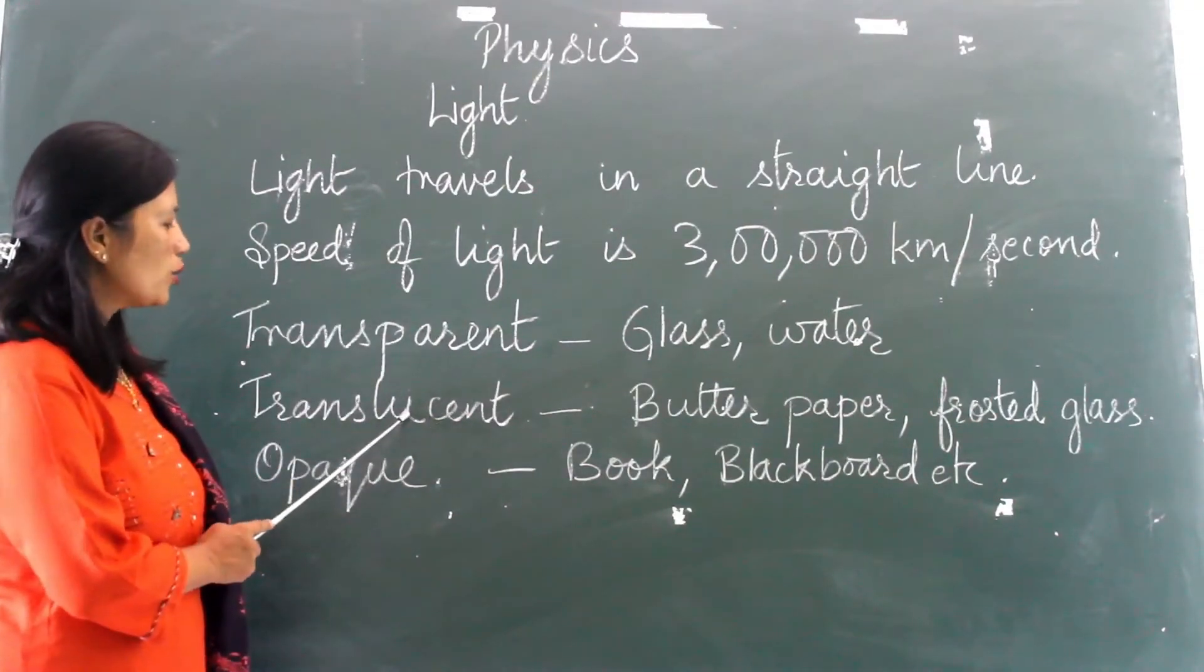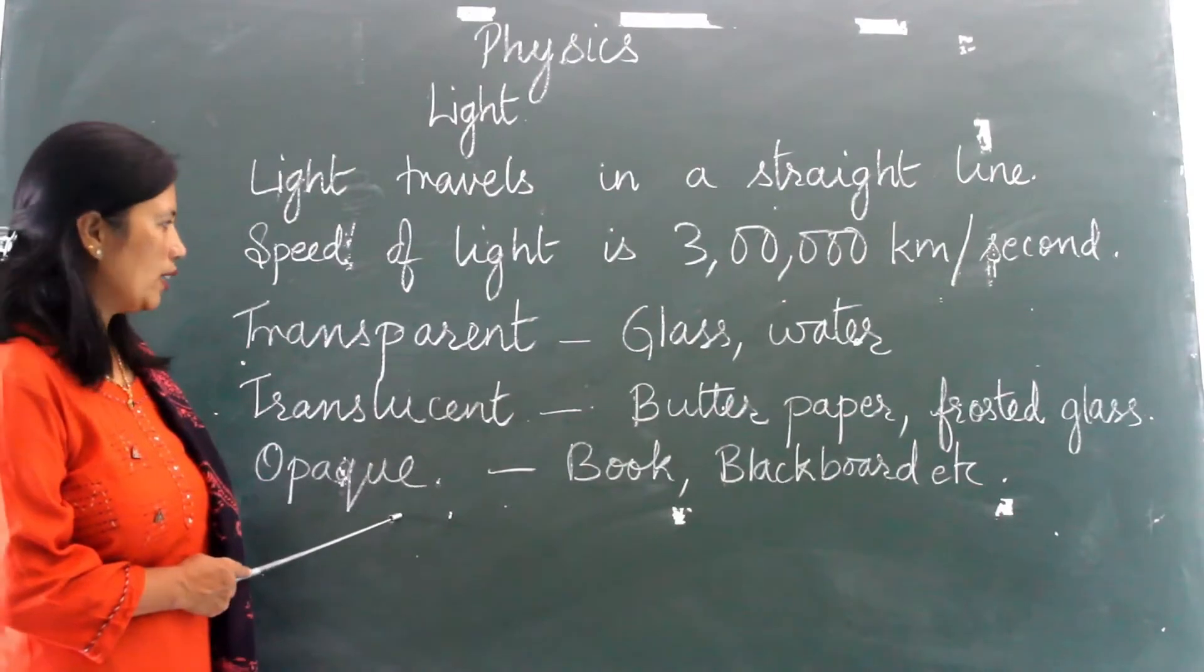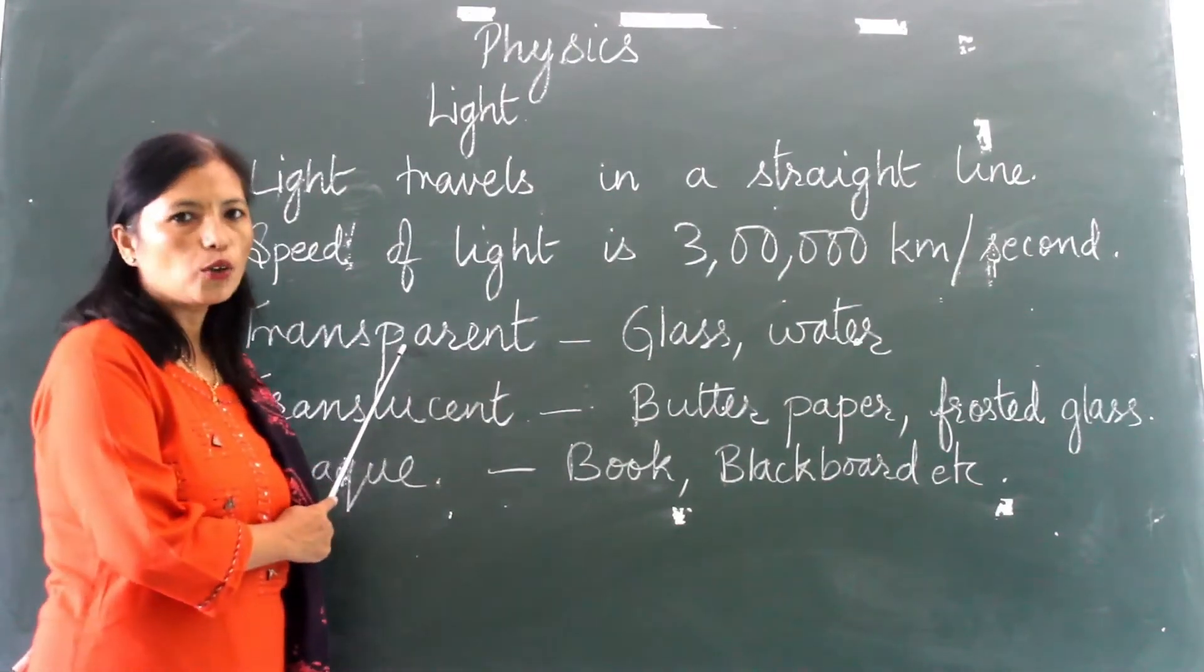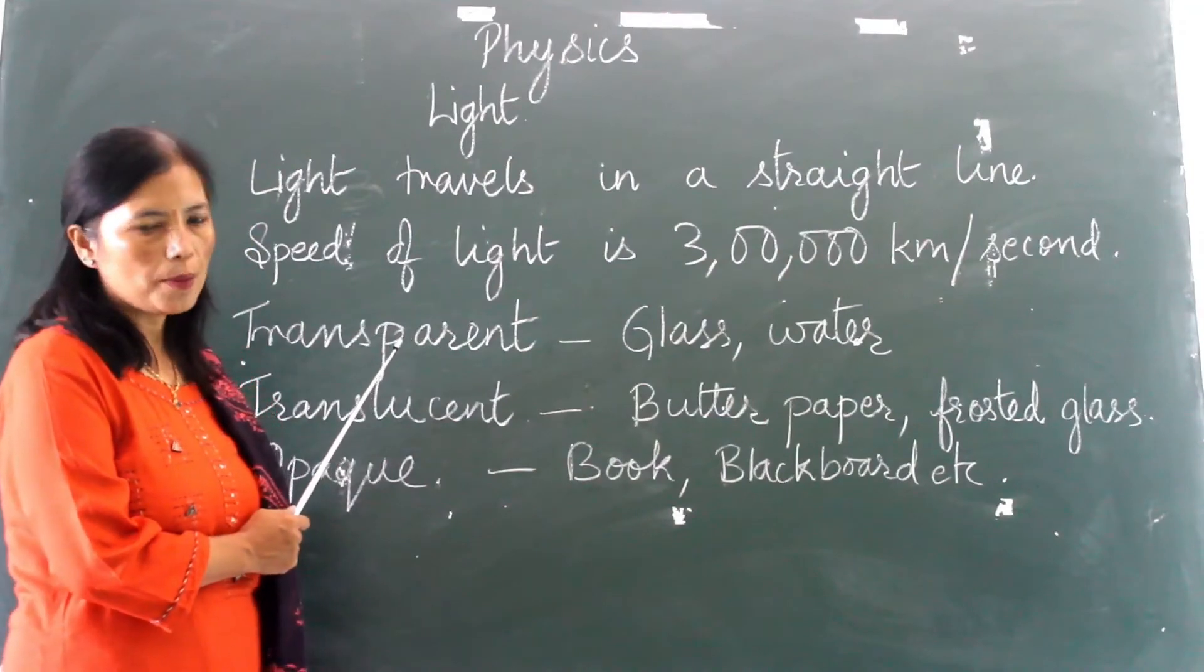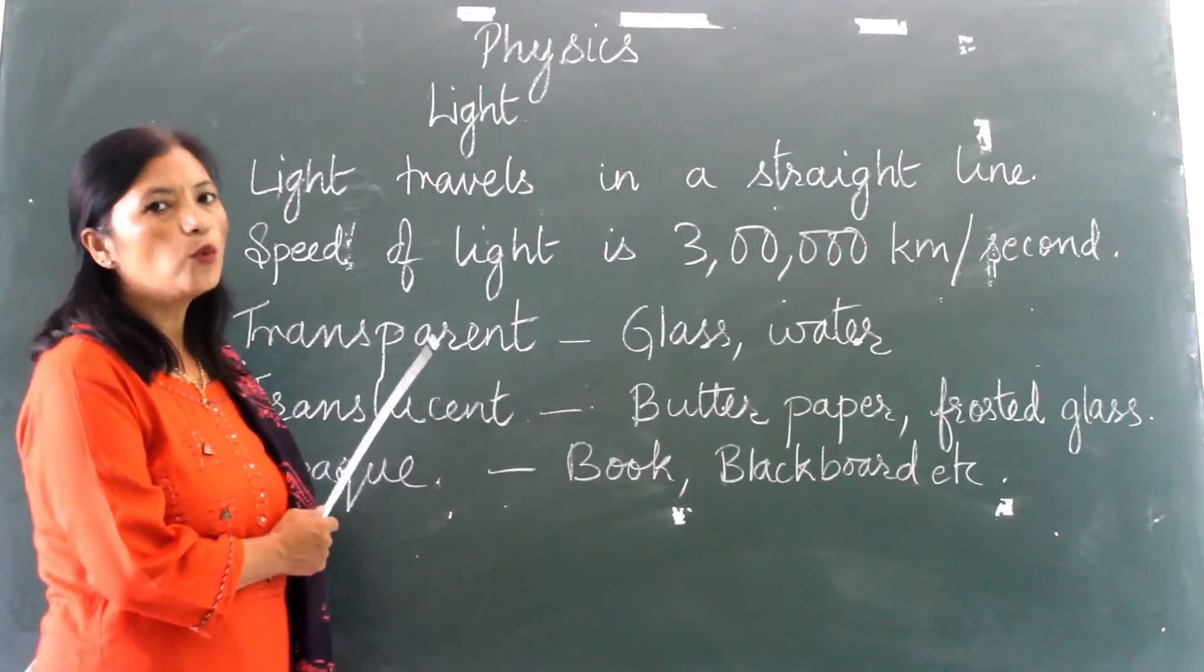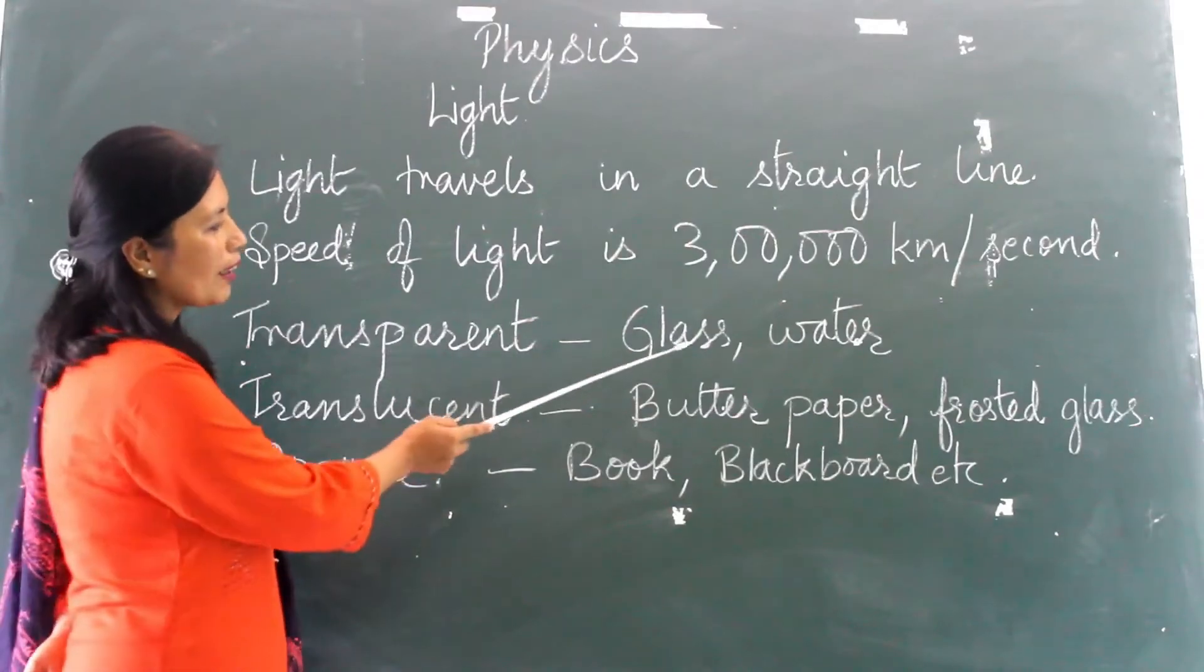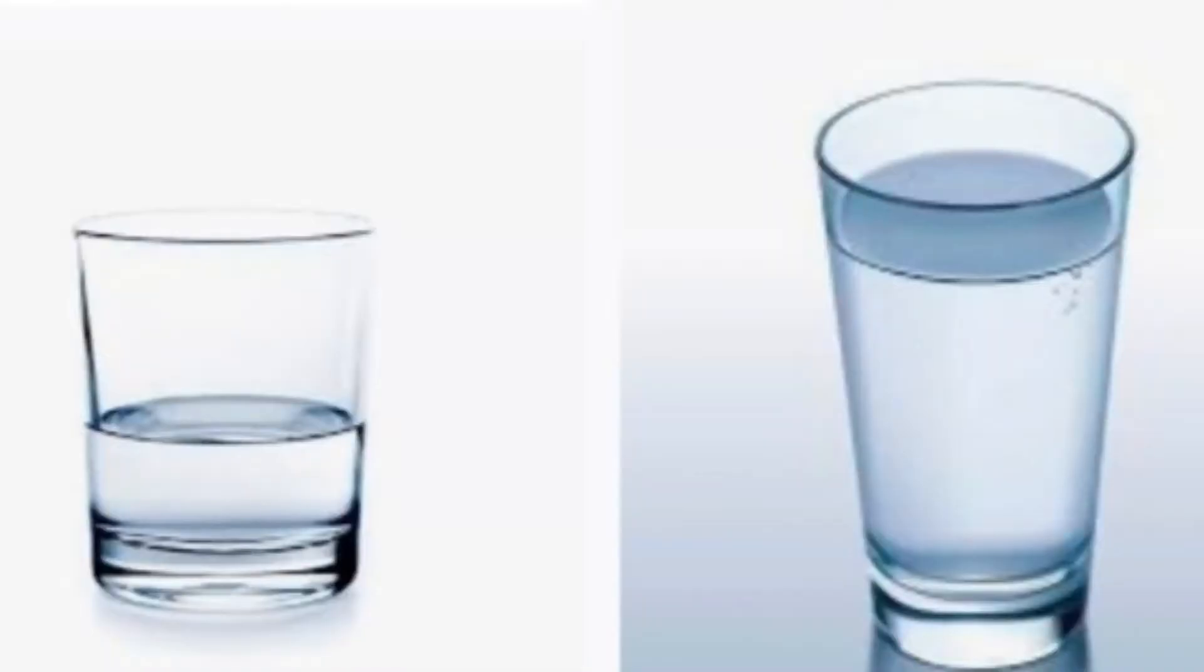Transparent, translucent, and opaque. Transparent objects are those which allow light to pass through them easily and we can also see through them. For example, glass, water, etc.